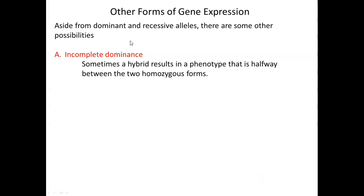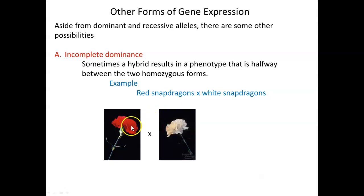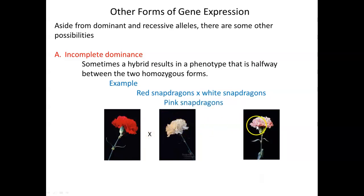There are some traits in some species where if you have a hybrid — a hybrid means you're heterozygous, you have one of each — sometimes that hybrid results in a phenotype that looks like it's halfway between the two pure forms. Snapdragons are a great example. There are red snapdragons and there are white snapdragons. But if you take a red snapdragon and cross-pollinate it with a white snapdragon, you end up with pink. This isn't some petals being red and some white — all the petals have a pinkish hue because of incomplete dominance. So we're seeing both the red phenotype and the white phenotype being expressed in this plant.